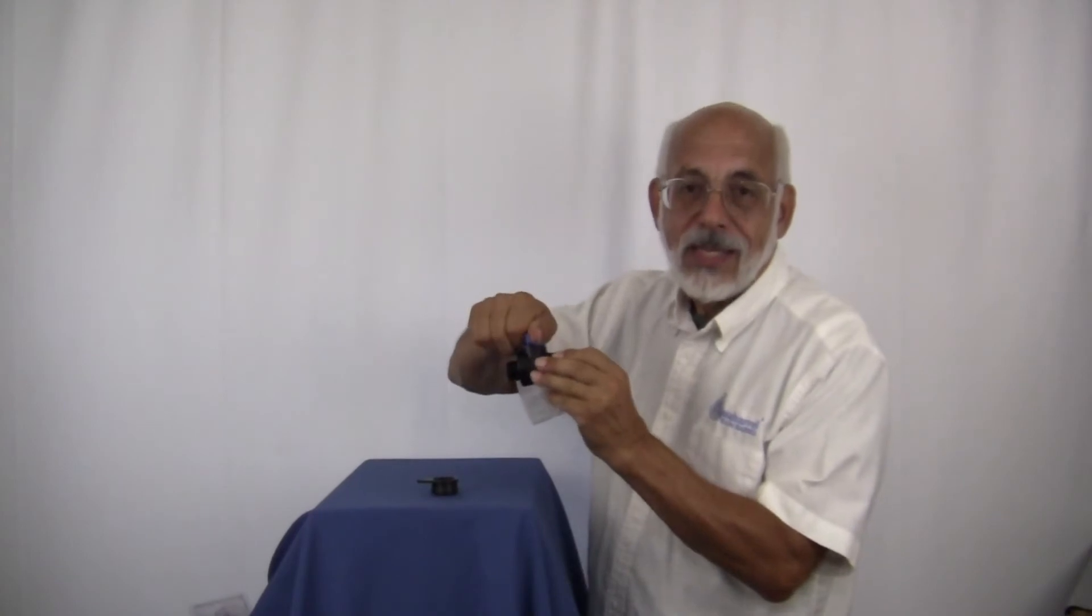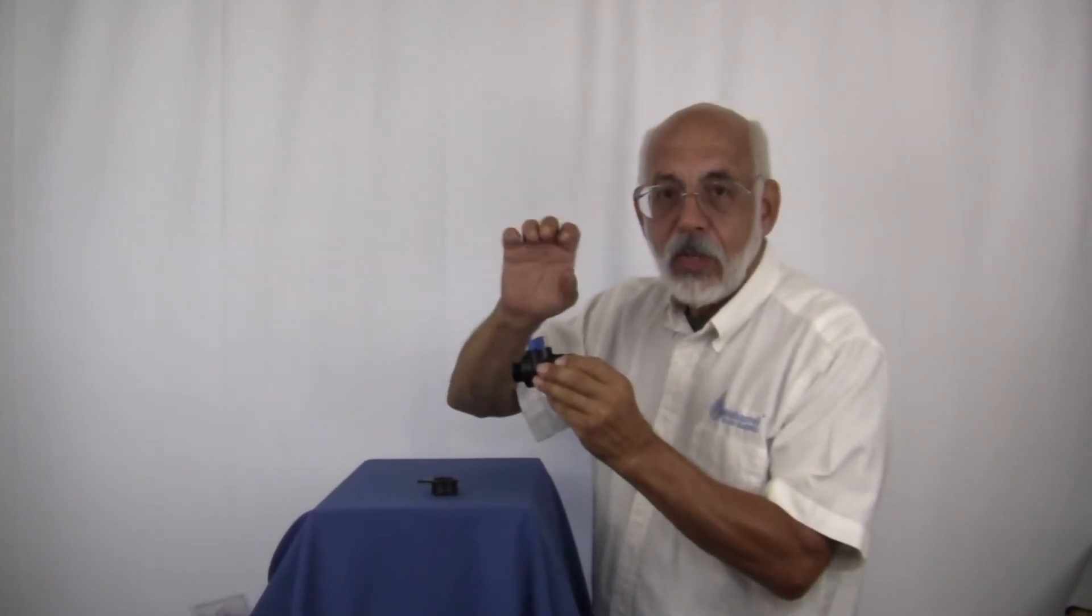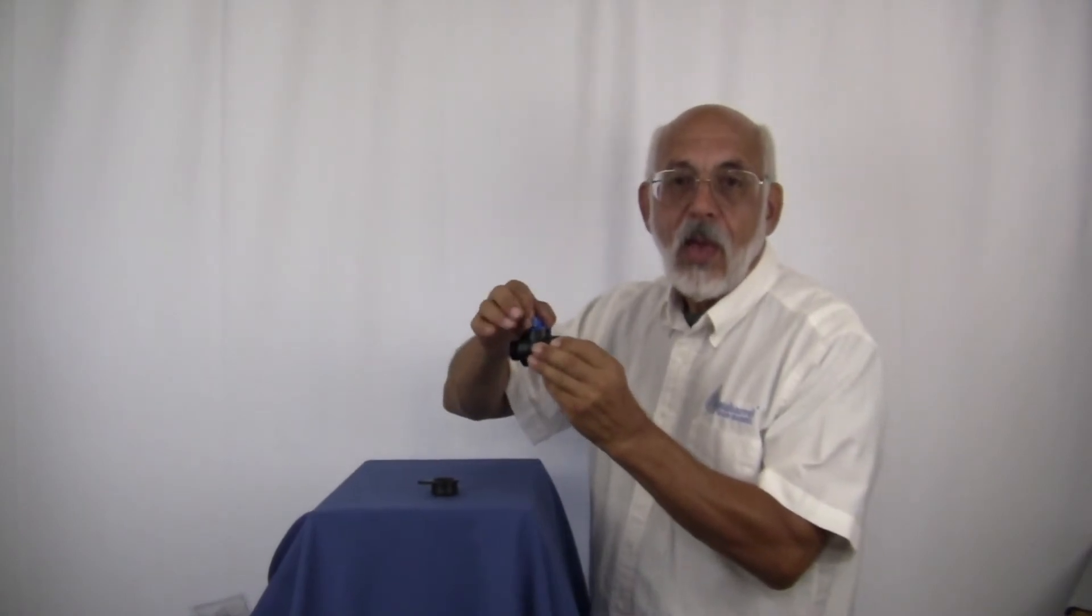Literally there's a ball on the inside and it just rotates. It's got a hole through it, so when it's open it allows the water to pass through, and when it's closed obviously the water is not moving through.